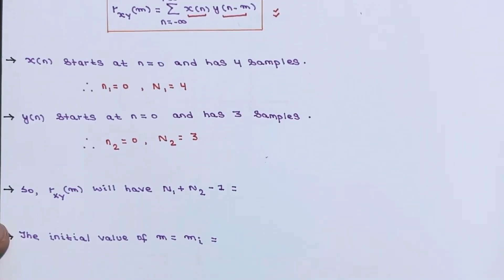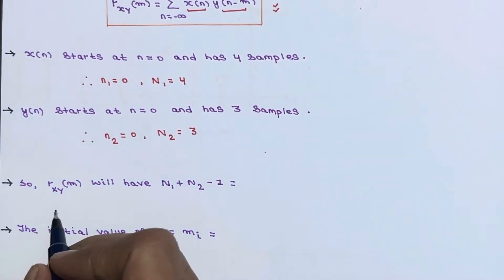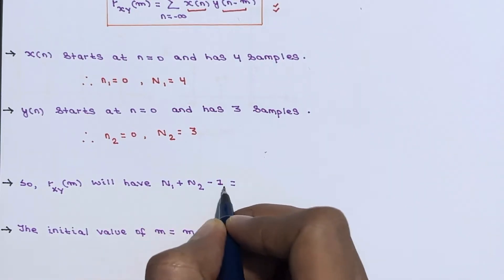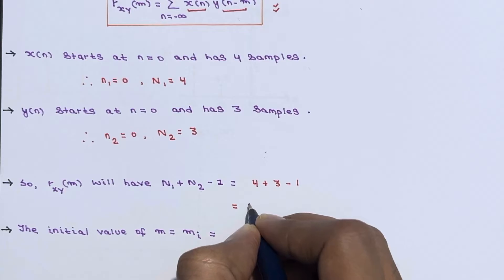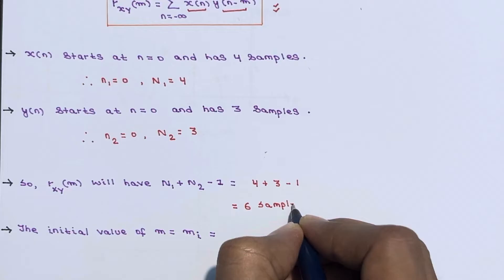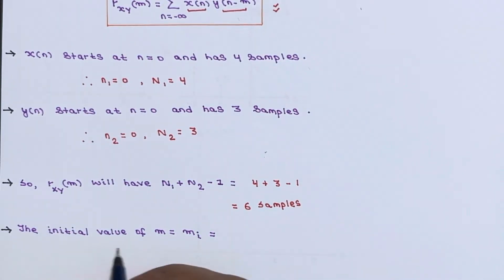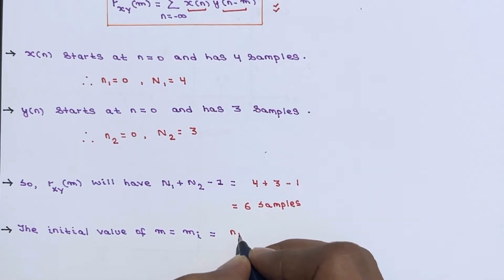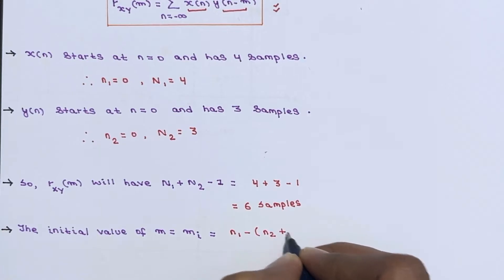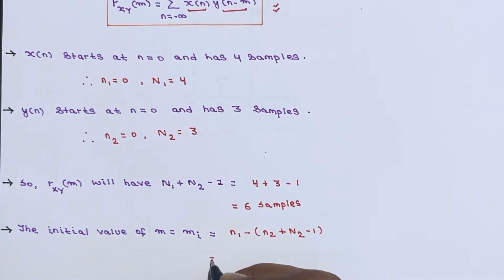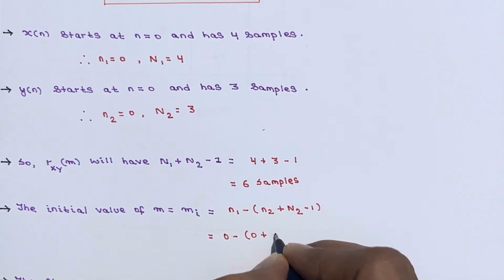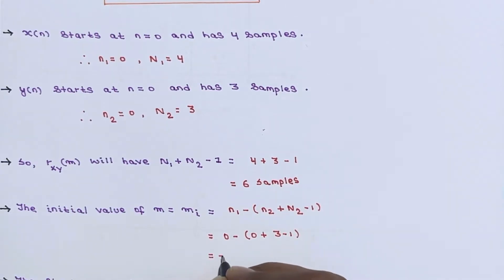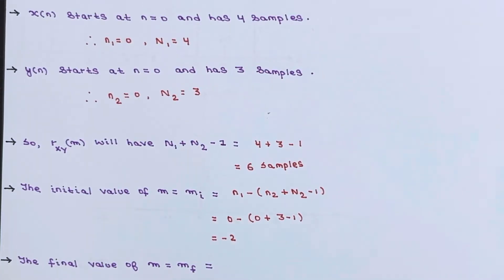Now rxy[m] will have N1 + N2 - 1 samples, which equals 4 + 3 - 1 = 6 samples. The initial value of m, represented as m_i, equals n1 - (n2 + N2 - 1). Solving: 0 - (0 + 3 - 1) = -2, so the initial value of m is -2.